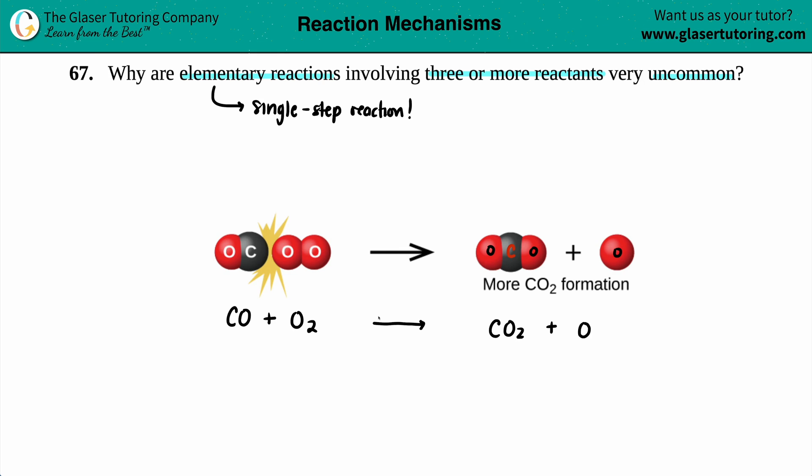Now in this case, if we did want to categorize what type of elementary reaction this is, this would be classified by how many reactants you have starting off. In this elementary step I see that I have one reactant, carbon monoxide, coming together with another reactant.